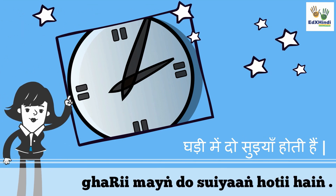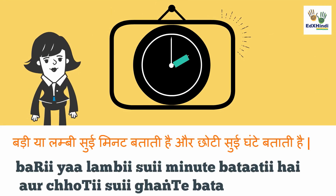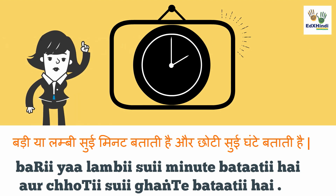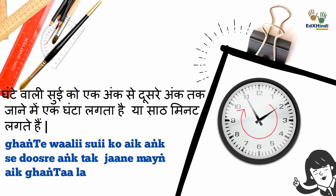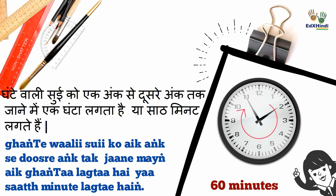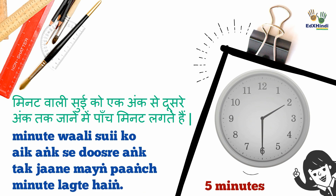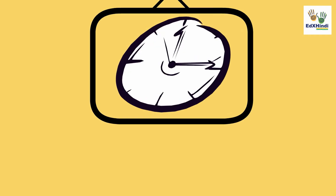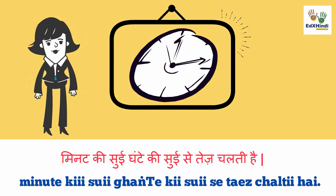Ghari mein do suiyaan hoti hai. A clock has two hands. Bari ya lambi sui minute batati hai aur chhoti sui ghante batati hai. The longer hand tells us the minutes and the shorter hand tells us the hour. Ghante wali sui ko ek ankh se doosre ankh tak jane mein ek ghanta lagta hai ya saath minute lagte hai. The hour hand takes 1 hour or 60 minutes to go from one number to the other. Minute wali sui ko ek ankh se doosre ankh tak jane mein paanch minute lagte hai. The minute hand takes 5 minutes to go from one number to the other. Minute ki sui ghante ki sui se tez chalti hai. The minute hand moves faster than the hour hand.